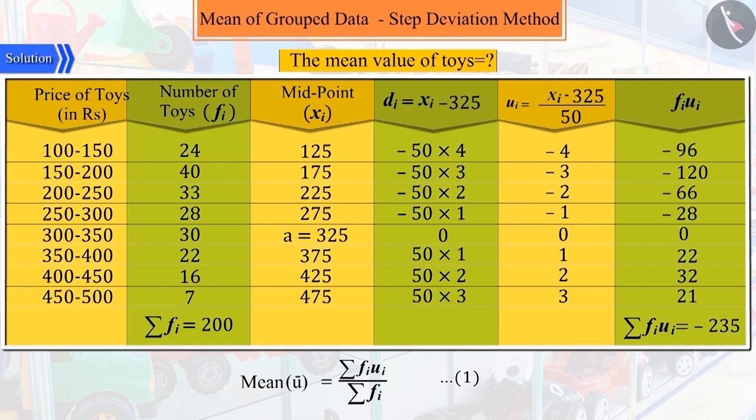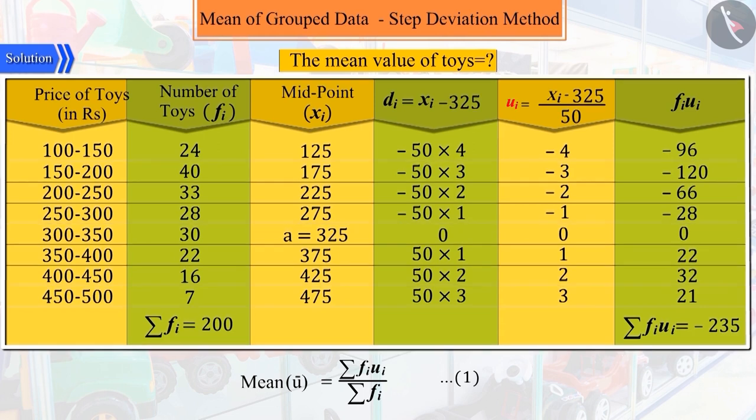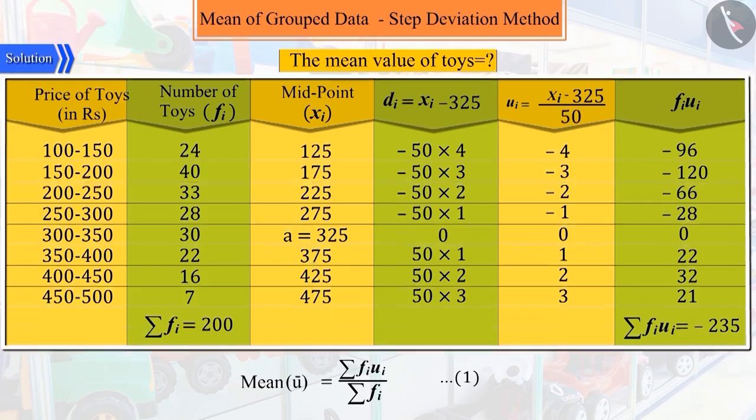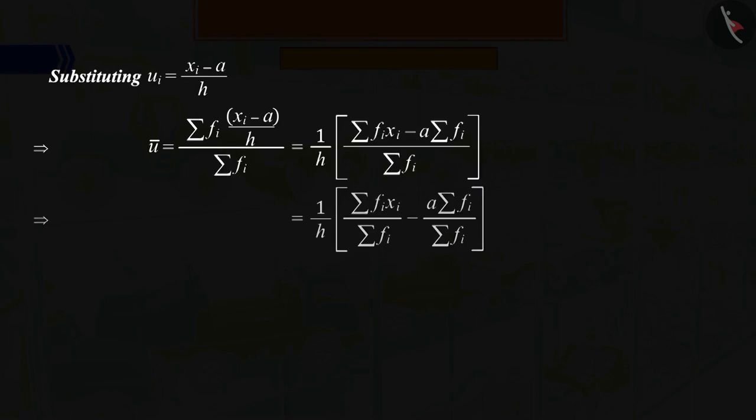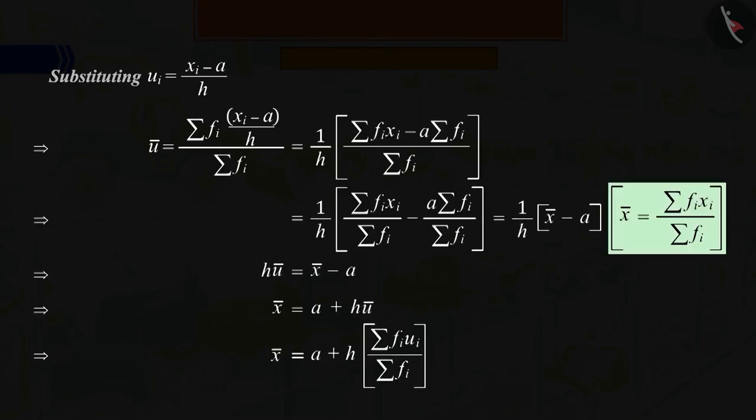But you must be remembering that to obtain UI, we subtracted A from each XI and then divided it by H. Therefore, to find the mean, by substituting the value of UI in equation 1, the following formula is obtained.